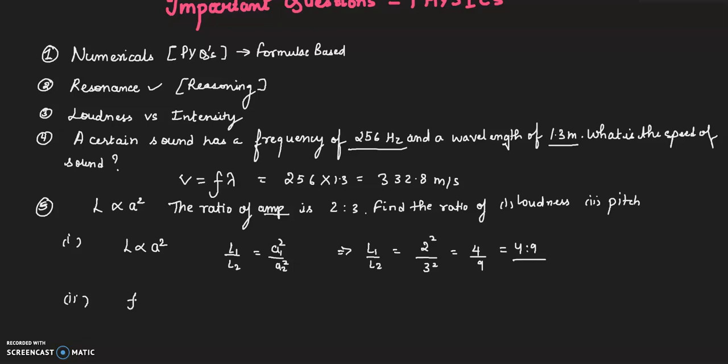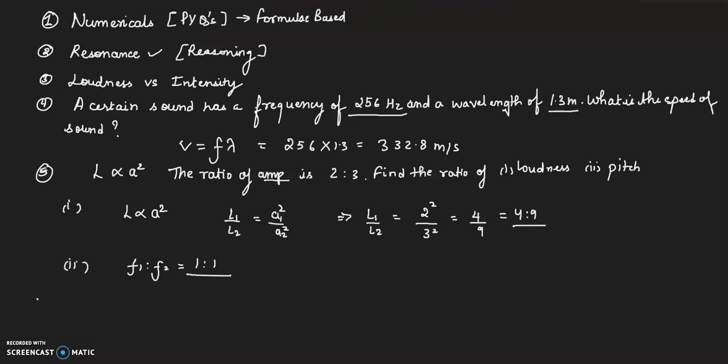The second part is pitch. So pitch of a sound does not depend on its amplitude, so here the ratio of pitch F1 is to F2 will be 1 is to 1. And there is this formula: F is equal to 1 by 2 pi under root of G by L, and frequency of a pendulum is inversely proportional to its length.